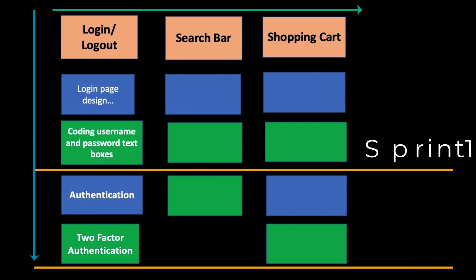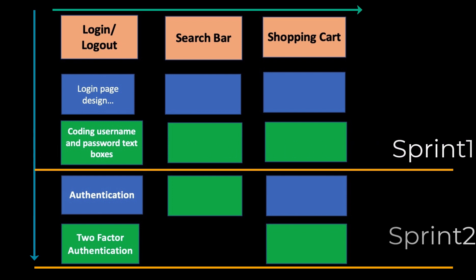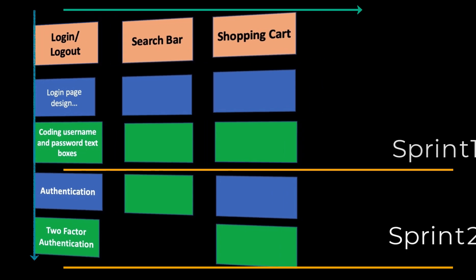It can be sprints or releases based on your processes. And now our user story map is good to go. It's ready to be used by the team. I hope all this information will help you while you create or read user story maps.